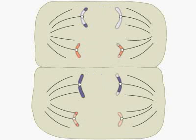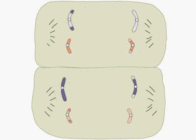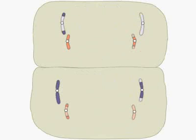Overall, the two divisions of meiosis produce four cells, each containing the haploid number of chromosomes.